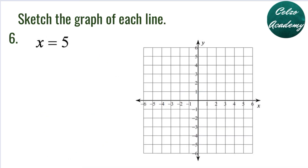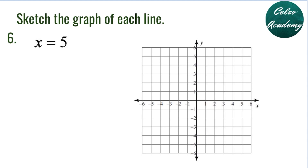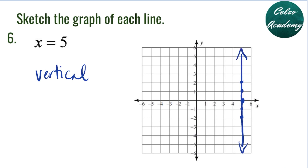Question number 6: X is equal to 5. Is this a vertical line or horizontal line? X equals a constant is a vertical line. We go to the X-axis and look for X equals 5. Points include (5, 0), (5, 1), (5, 2), (5, negative 1), (5, negative 2), and so on. We draw a vertical line passing through X equals 5.